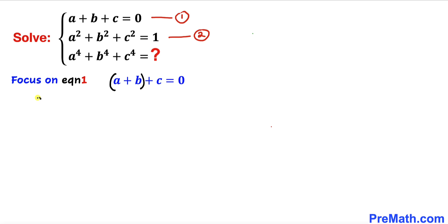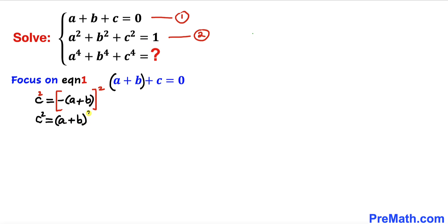So c is going to be equal to negative a plus b. Let me take a square on both sides. This becomes c squared on the left, and on the right, since negative squared is positive, we get a plus b whole squared. Recalling the identity, a plus b whole squared equals a squared plus 2ab plus b squared.